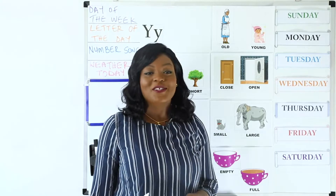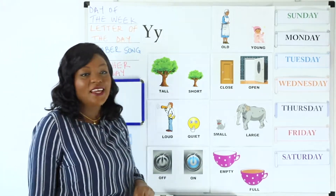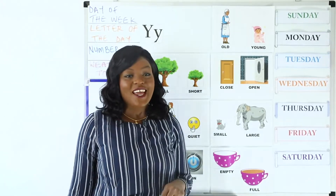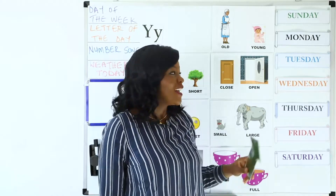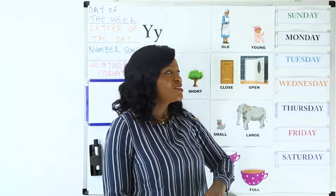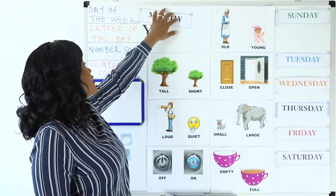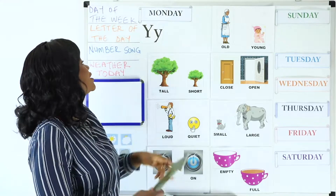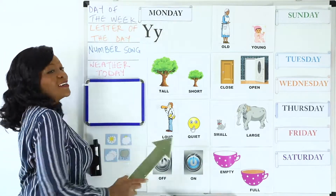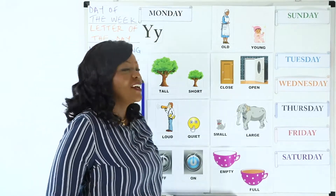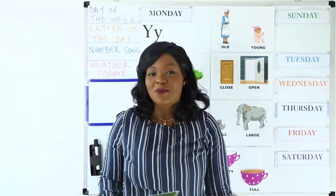Good singing and well done everyone. So what is the day of the week? What day is it today? Yesterday was Sunday, that means today is Monday. So today is Monday. Let's put that over here. The day of the week is Monday. Today is Monday. Can you see my lovely board?